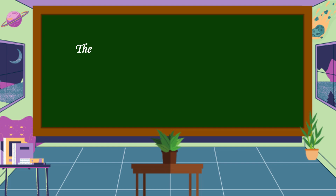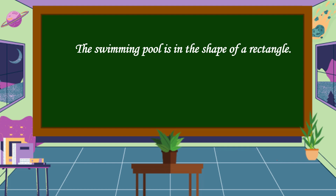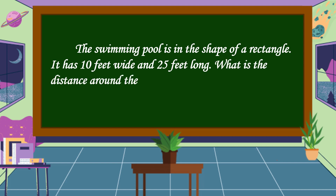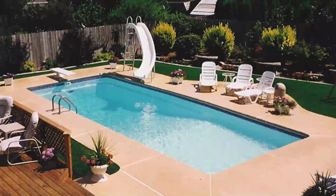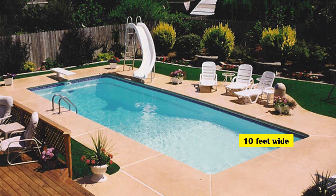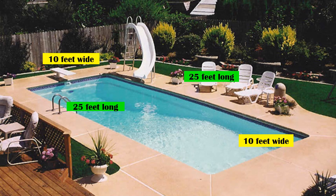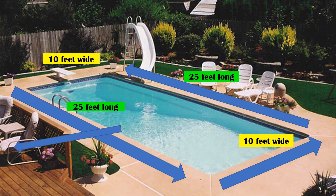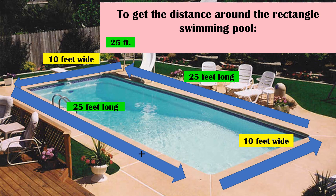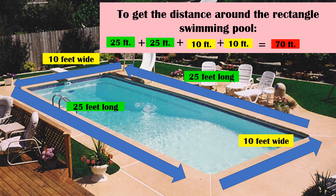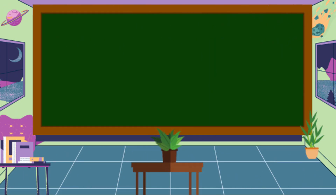This is our problem. The swimming pool is in the shape of a rectangle. It is 10 feet wide and 25 feet long. What is the distance around the pool? Let's visualize the problem first. Since the lengths are equal and also the widths, to get the distance around the swimming pool, we're going to add all the measurements: 25 feet plus 25 feet plus 10 feet plus 10 feet is equal to 70 feet. The distance around the swimming pool is called the perimeter.